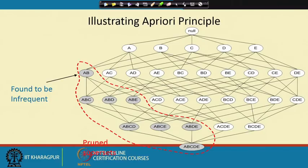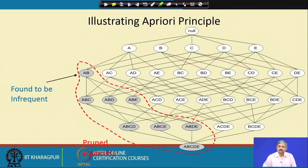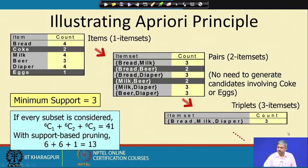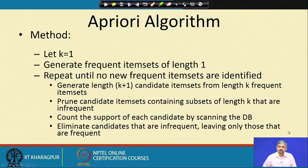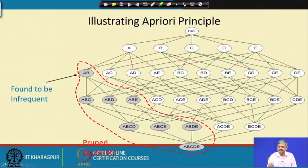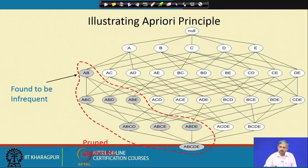This principle is used to prune candidates. We can remove the pruned candidates and evaluate only the rest. This is used in the a priori algorithm. What we do is go down the lattice, take the single item sets which are frequent, then combine them to produce frequent 2-item sets, and from 2-item sets produce 3-item sets.